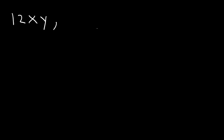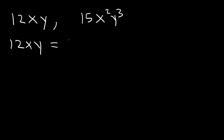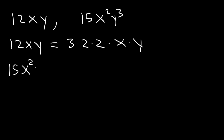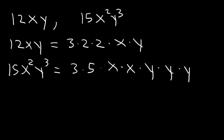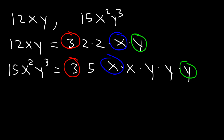Now, what about this one: 12xy and 15x squared y cubed? Find the GCF between these two monomials. Let's start with 12xy. 12 is 3 times 4, and 4 we can write as 2 times 2. Then we have 1 x and 1 y. For 15x squared y cubed: 15 is 3 times 5, x squared is x times x, and y cubed is y times y times y. Let's identify what's common in both lists: we have a 3, at least one x, and a single y. That's all that we can find that's common. So, the GCF, the greatest common factor, is 3xy.